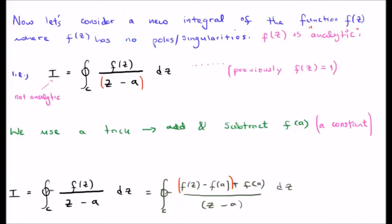Now let's consider a new integral of the function f of z. Now remember, of course, we're going to say from now on that if it's small f of z, this function has no poles or singularities. This function is analytic.